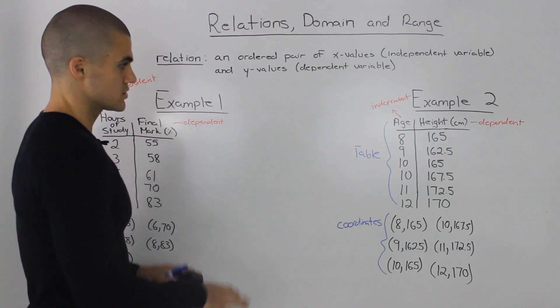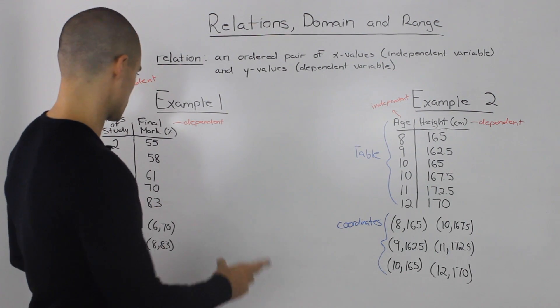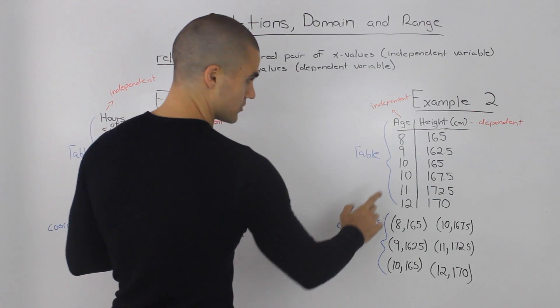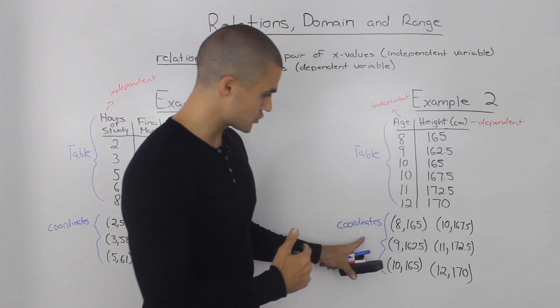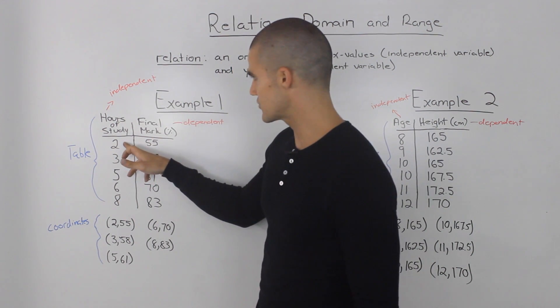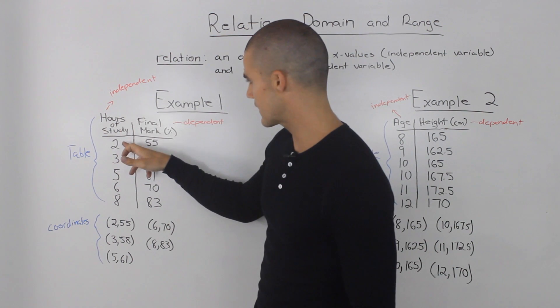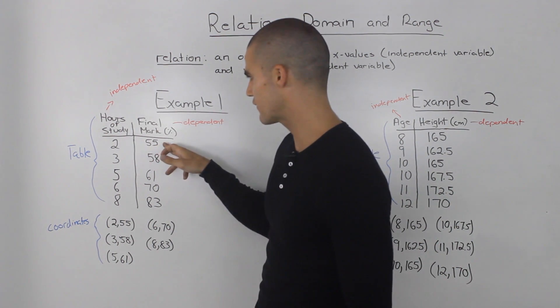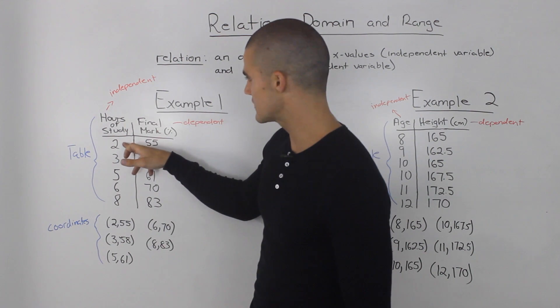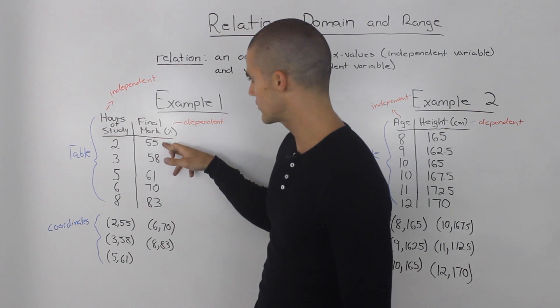Now there are multiple ways to show a relation. We started off by showing these two relations in tables, but you can also show them in coordinate form. For example, our first student studied two hours and got a final mark of 55. The independent variable is this 2 and the dependent variable is this 55.